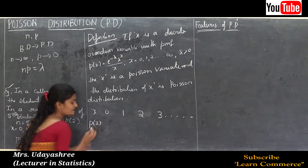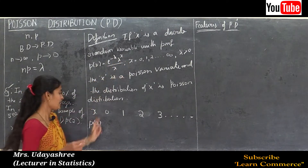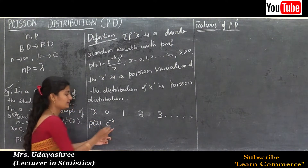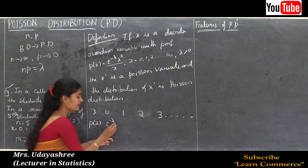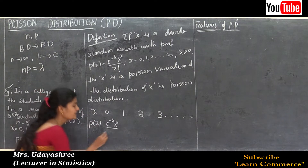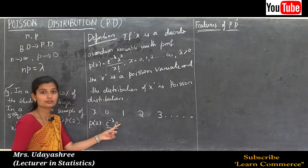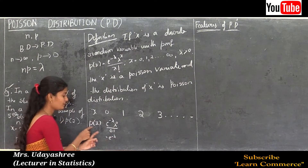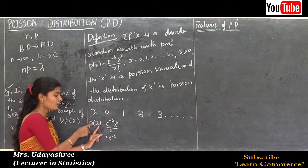Now, let us find P(x = 0). Using the formula P(x) = e^(−λ) · λ^x / x!, substituting x = 0: lambda to the power 0 is 1, and 0 factorial is 1. So P(x = 0) = e to the power minus lambda.